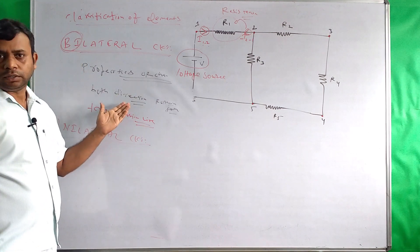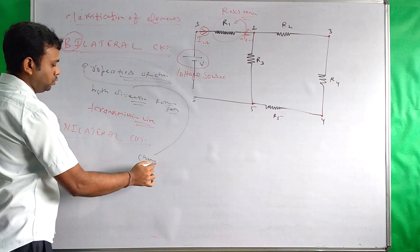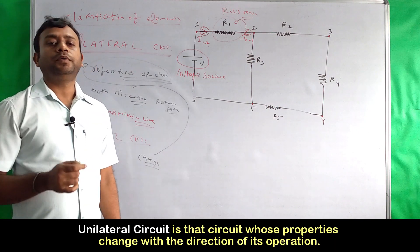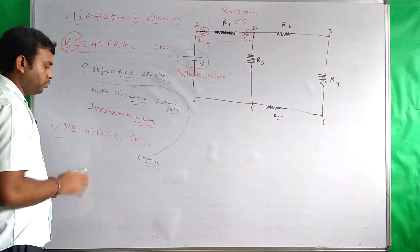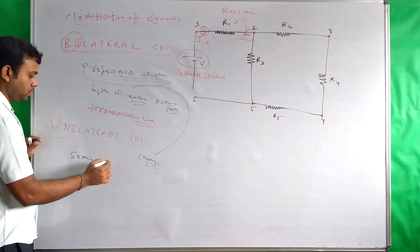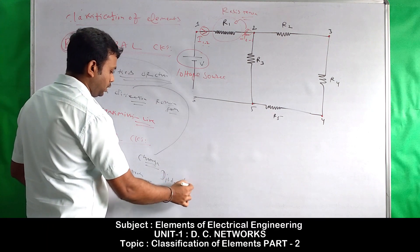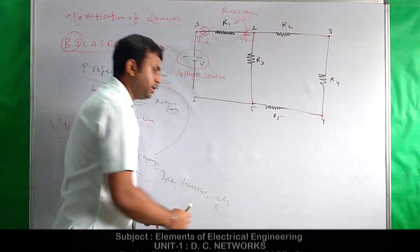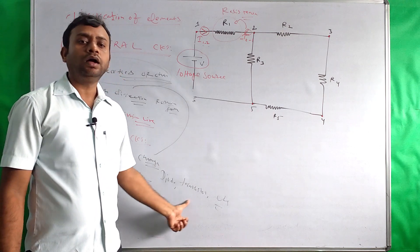Unilateral circuit mein kya hoga — jo bhi properties aur characteristics hogi, woh direction ke saath change ho jaegi. We can define: a unilateral circuit is a circuit whose behavior or property changes as the direction of the current changes. For example, jo bhi hamare semiconductor elements hain — like diode, transistors, etc. — in elements ka behavior badal jaata hai. Matlab yadi hum direction of current ko change kar den, to inki operation badal jaati hai.